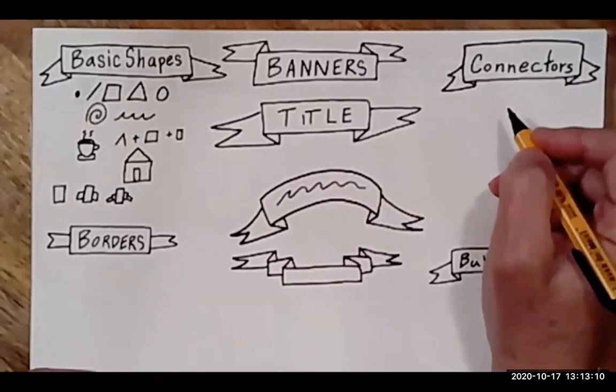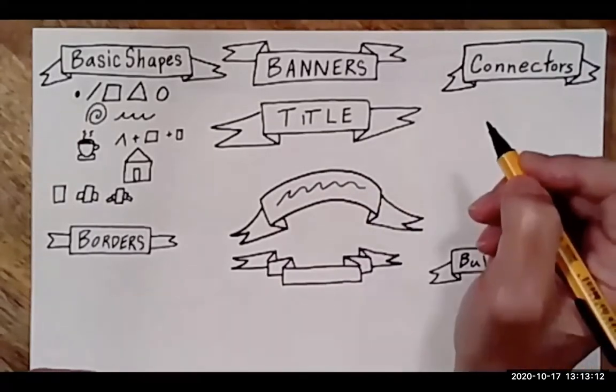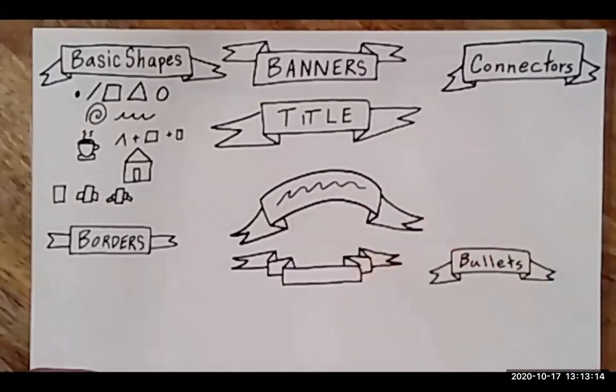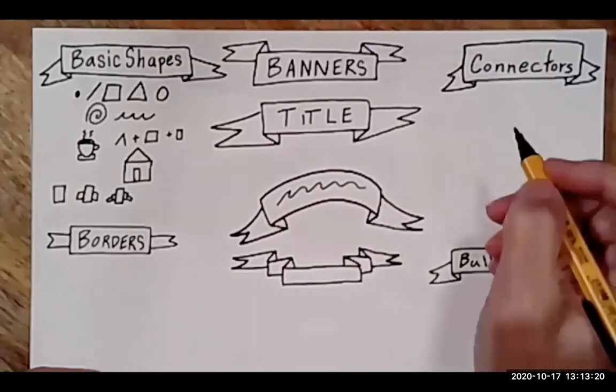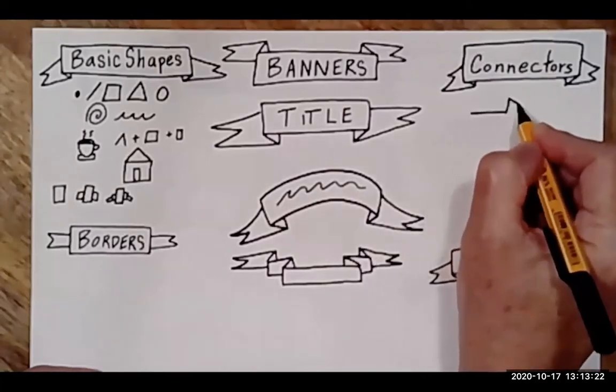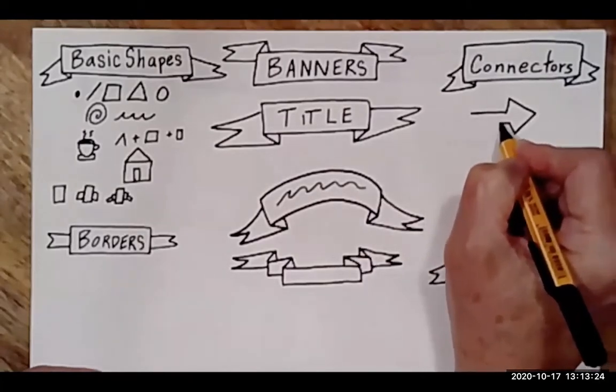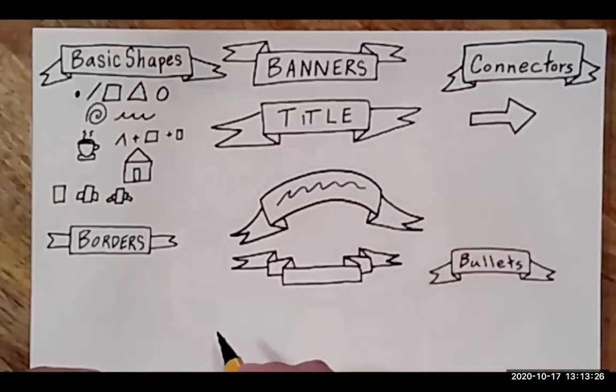Connectors are really just about showing where the information is supposed to travel on the page. And the best one there is is a simple arrow. Arrows are universal. Everybody knows go this way.